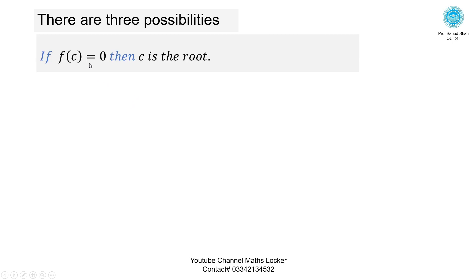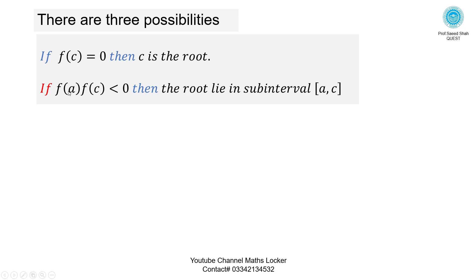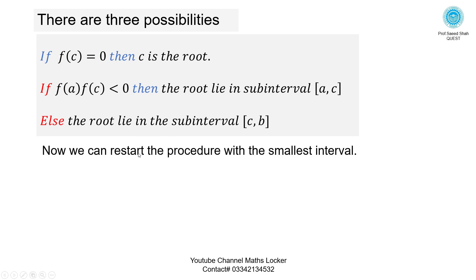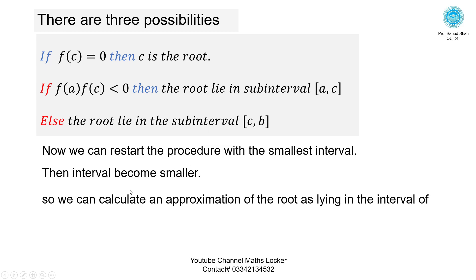There are three possibilities: if f(c) = 0, then c is the root. If the product f(a)·f(c) < 0, then the root lies in the sub-interval [a, c]; otherwise the root lies in the sub-interval [c, b]. We restart the procedure with the smallest interval, then the interval becomes smaller.